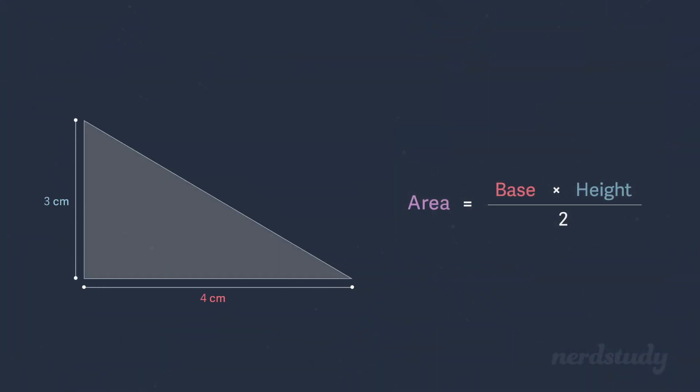We've got a triangle like this. What is the base here? Well, it would be 4 centimeters. And what is the height here? It would be 3 centimeters. So what's the area then?